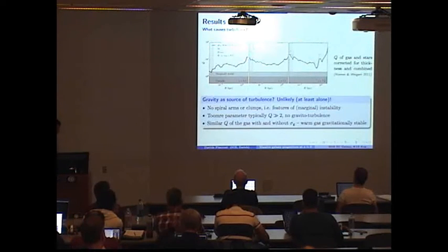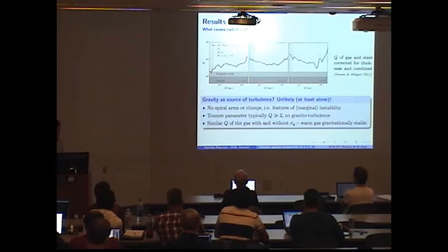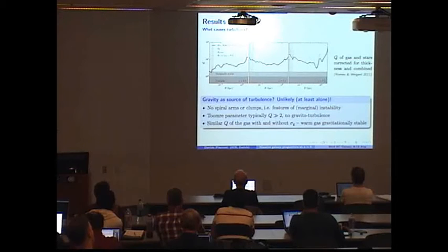So we can ask ourselves, of course, what is causing this turbulent motion in the galaxy. Well, one possibility is gravity within the disk. So the disk can reach a gravito-turbulent state, where if it reaches a marginally stable condition, the Toomre parameter is typically of order of two or so. But this does not seem to be the case in our simulation, where the typical Toomre parameter of the gas, which is very warm and also turbulent, seems to be much higher than that, at about 10 or so.